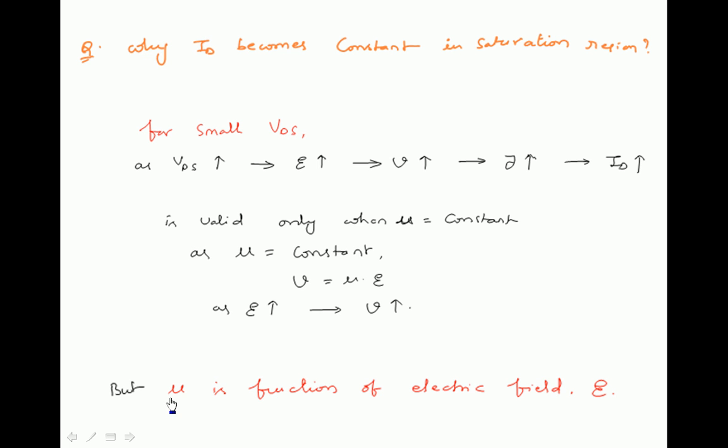But mu is actually a function of electric field — it is no more constant as we assumed. Mu is a function of electric field. We will first see how mu relates to electric field, and from that we will establish that drain current is constant in saturation region.